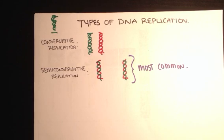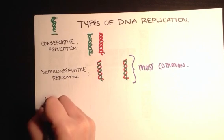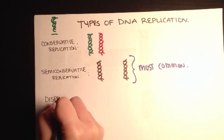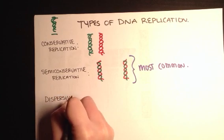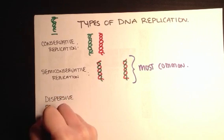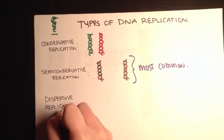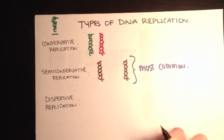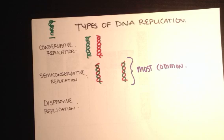The last type of replication, of DNA replication, is called dispersive. And dispersive replication is when the original strand, when one strand has both the parental and newly synthesized DNA in it.